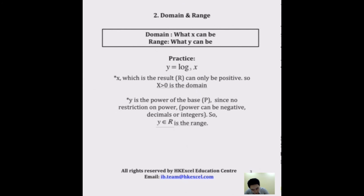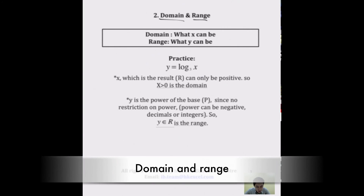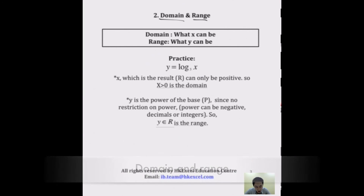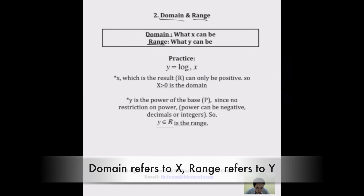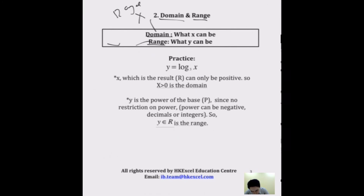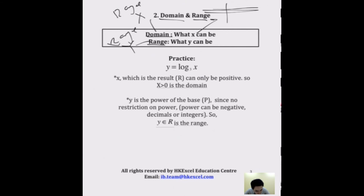Let's move on to domain and range. This type of question is very easy, though many students find it difficult. Domain and range refer to the same idea: domain refers to the X-axis — the range of X values — while range refers to the Y-axis — the range of Y values.